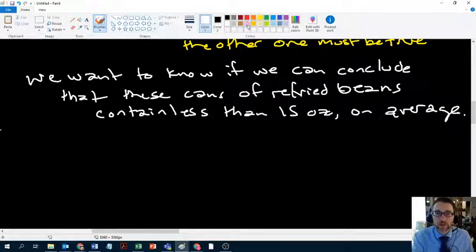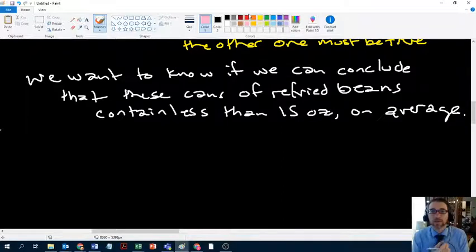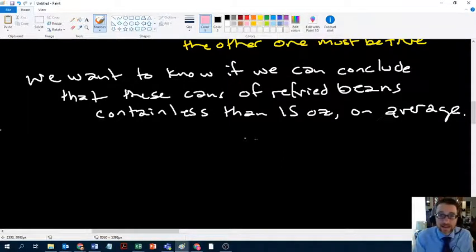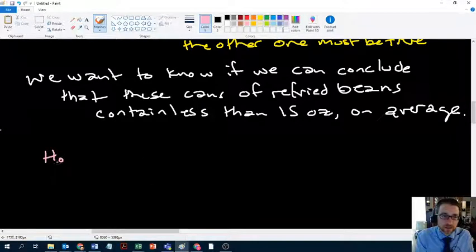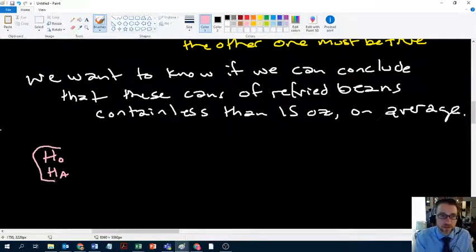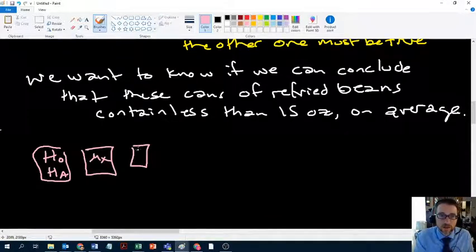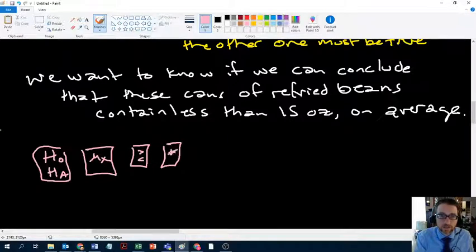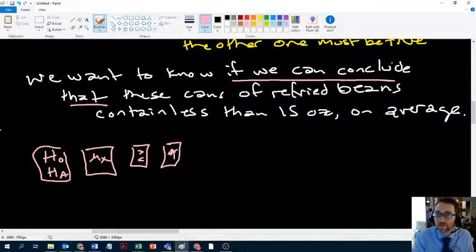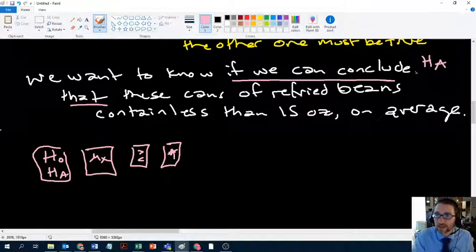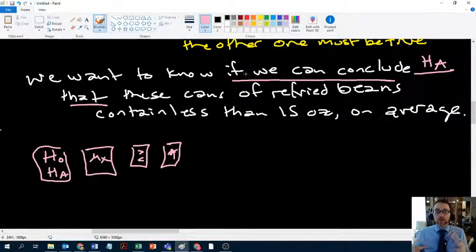We want to know, can we conclude that these cans of beans are underfilled? What does underfilled mean? Well, this is what it means. They're less than the stated value on average. And whenever you're trying to do part one, step one in practice, you're always trying to find some statement, some assertion about the way the world works. And then in there, you're trying to find the analogs because we're always going to be able to convert these to something that looks like this. So there's going to be an H0 and HA. There's going to be some parameter that you're dealing with. There's going to be some set of binary relations and there's going to be some numerical value. Here we have, if we can conclude that, if you ever see, if we can conclude that, that's a dead giveaway that what's coming next is the alternative. Because the only one you can conclude is true is the alternative.